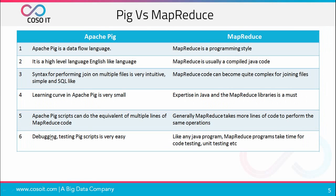Apache Pig is easy to debug and test, while MapReduce programs take a lot of time for coding and testing. All of these points mean that Pig Latin is much lower cost to write and maintain than Java code for MapReduce, so Pig is a preferred choice over MapReduce.